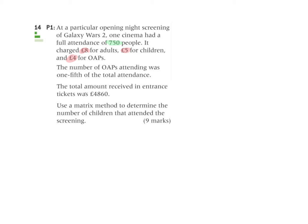I know that the total number of OAPs is one-fifth of the total, so that's one-fifth of 750. And I also know the total amount received at the entrance was a total of $4,860. And I'm told I have no choice but to use matrix methods to determine the number of children in attendance.